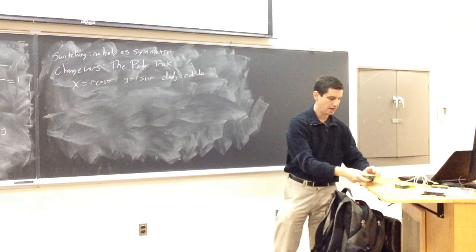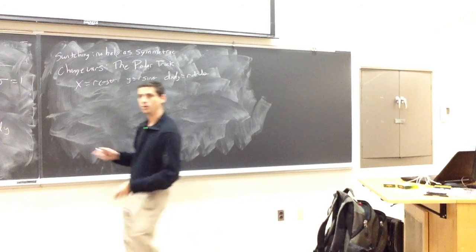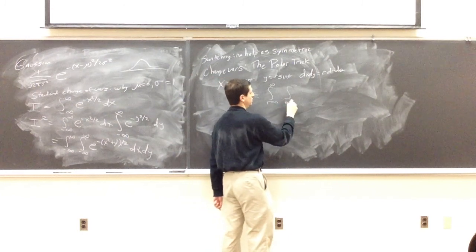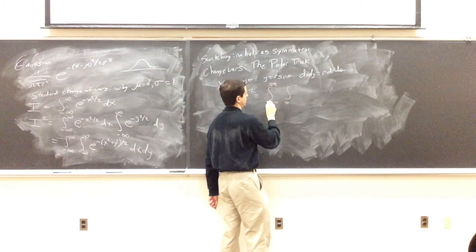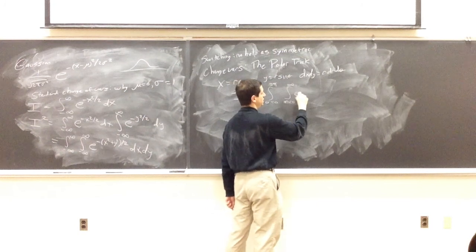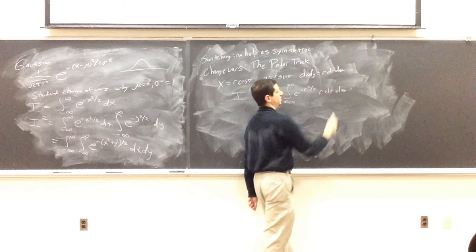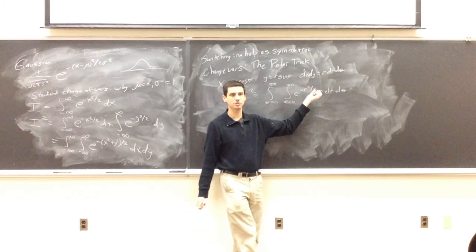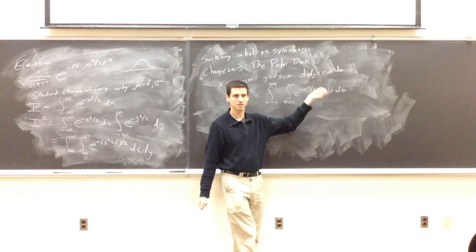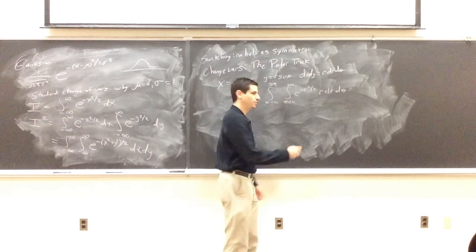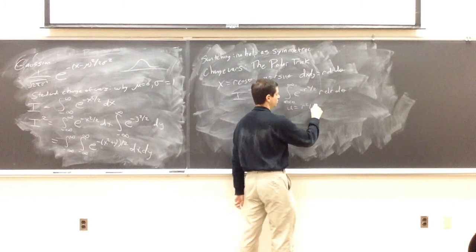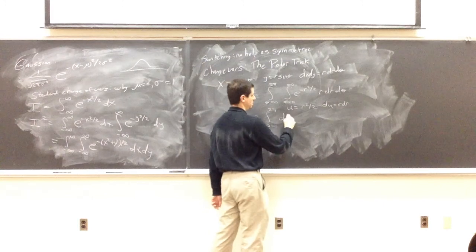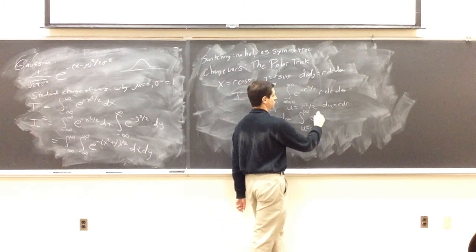When we do all of this, the bounds of integration are: r goes from 0 to ∞, θ goes from 0 to 2π. We get I² = ∫_0^{2π} ∫_0^∞ e^{−r²/2} · r dr dθ. The r integral is actually really nice — we do a u-substitution with u = r²/2, du = r dr. We get the integral over θ from 0 to 2π of dθ, times the integral of e^{−u} du from 0 to ∞.